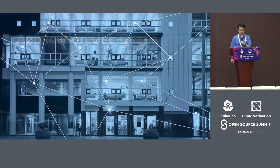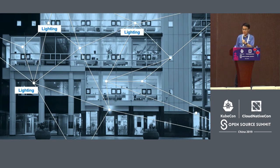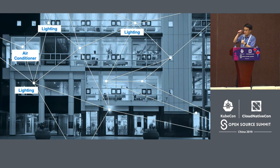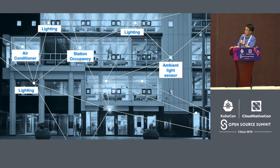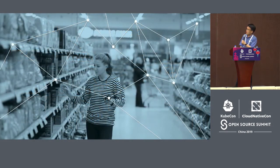Let's look at some potential application use cases of Bluetooth Mesh. The first is the smart building. If we upgrade the lighting system into a Bluetooth Mesh lighting system — for example, in a meeting venue like this — then naturally we would have a Bluetooth Mesh network architecture. The air conditioning system, station occupancy sensors, and curtain controls could all be based on the Bluetooth Mesh architecture to realize smart control and monitoring for a smart building.